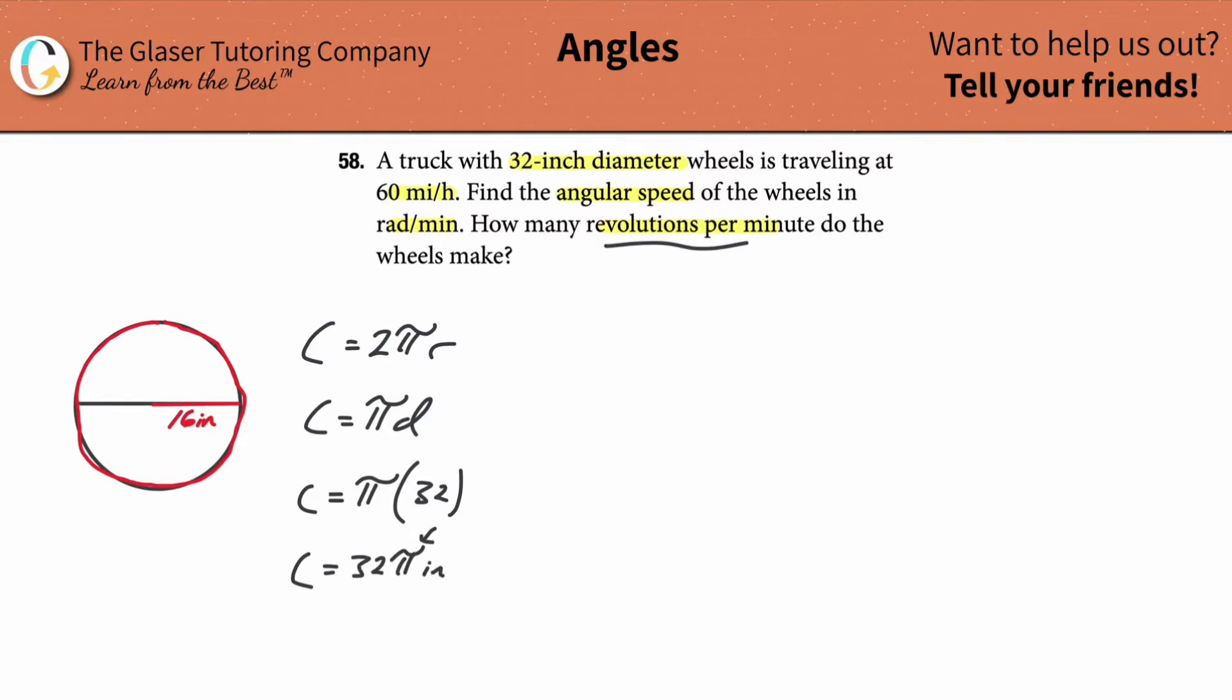Now remember, π is a number. It's 3.14159... So if you took 32 and multiplied it by π, you'd realize that the circumference then of this tire is about 100.5 inches. That's the circumference of the tire. That's the length of this red part that I traced.